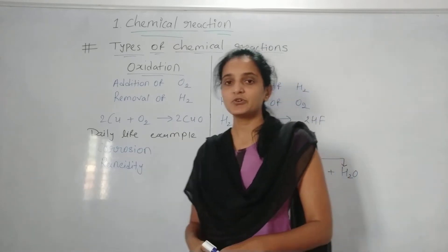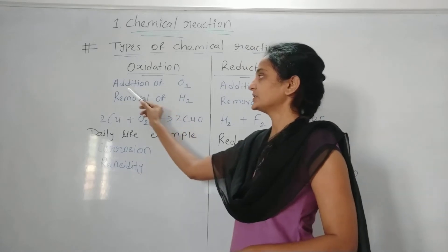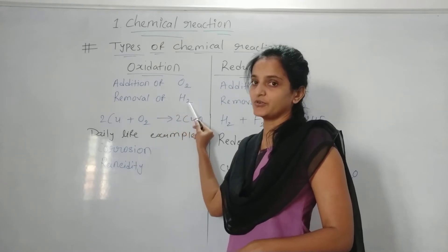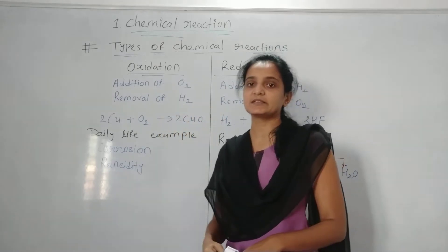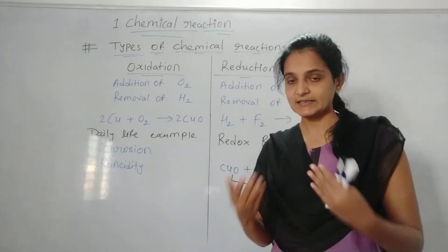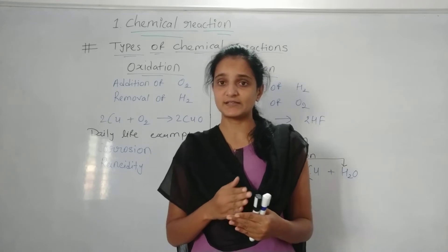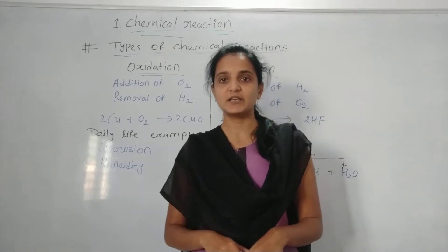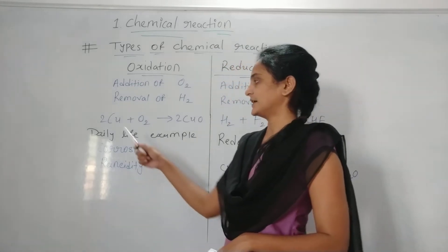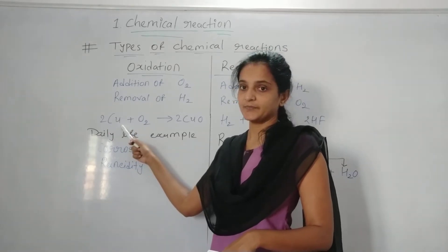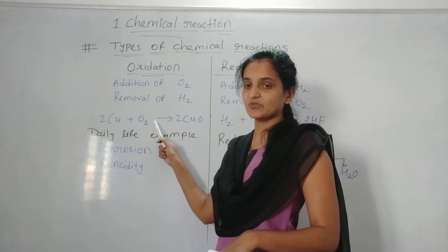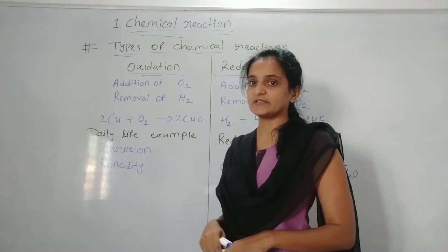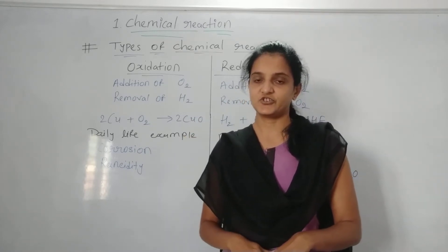Oxidation reaction can be defined in two ways: either during the reaction there will be addition of oxygen, or during the reaction there will be a removal of hydrogen. In both cases it is considered as the oxidation reaction. For example, here you can see copper reacting with oxygen — oxygen is added to the copper and it produces copper oxide. So here there is an addition of oxygen, that's why this reaction is called oxidation reaction.